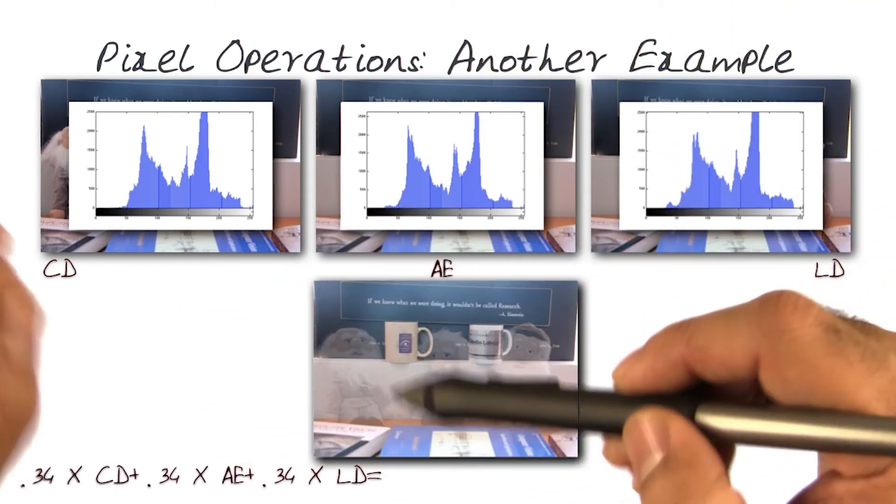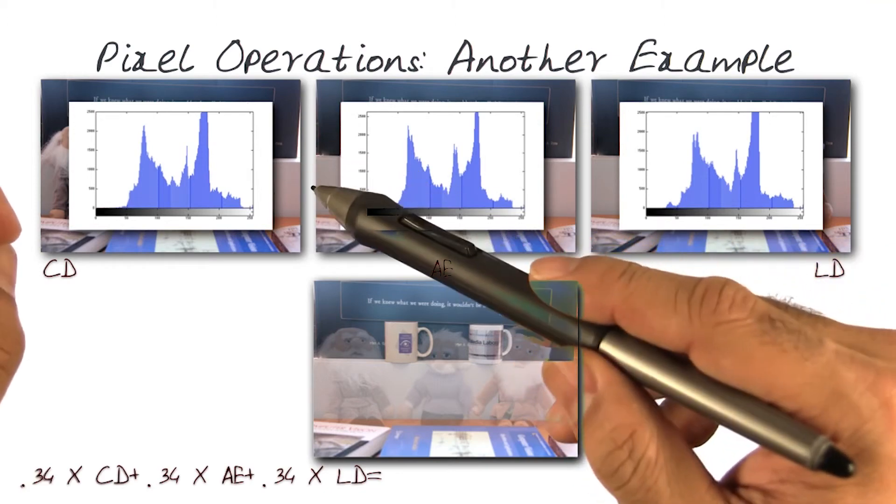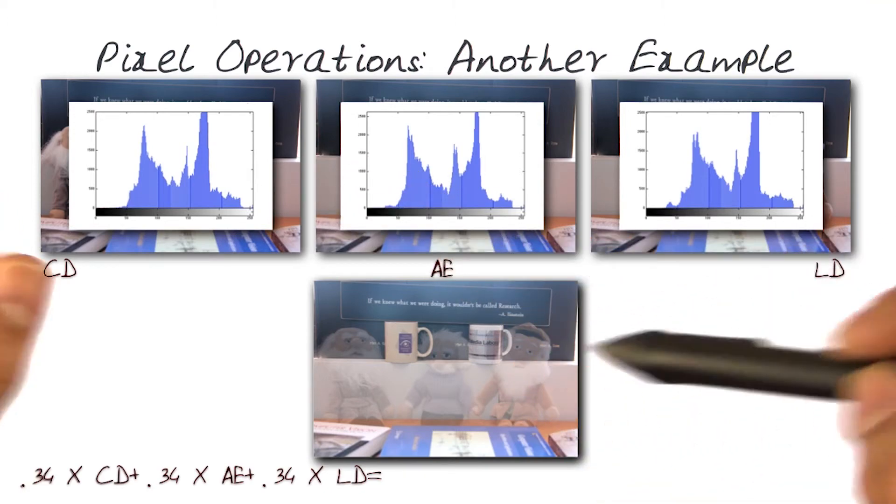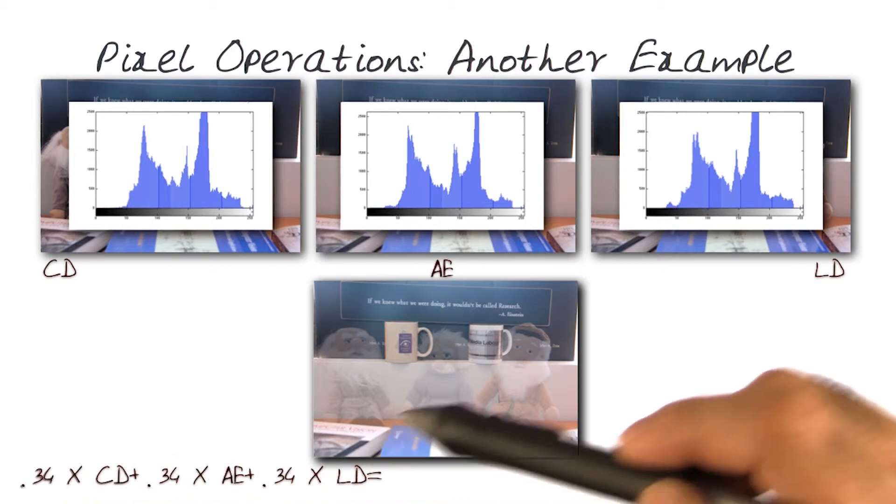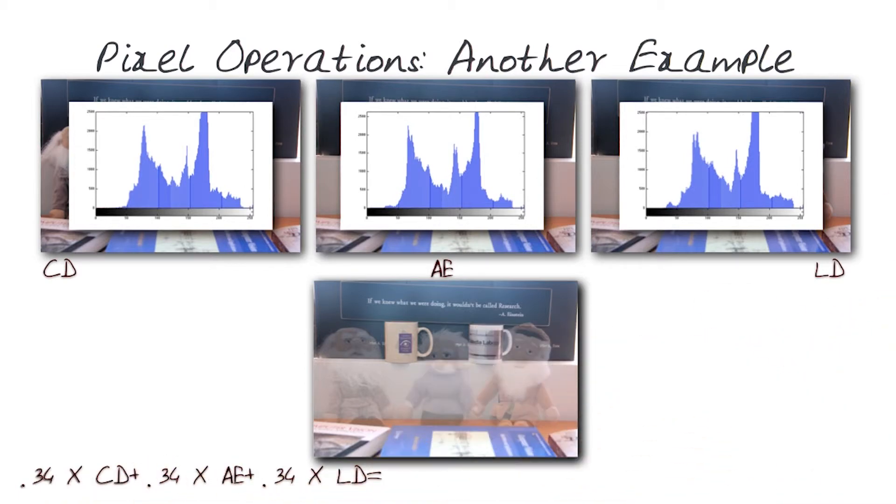One proposal would be to be able to combine the three images CD, AE, and LD with a different weighing function in front of it. So in this one, I do a multiplication of all of the elements individually with 0.34, the other one with 0.34, and also the third one with 0.34, and this is what I get.